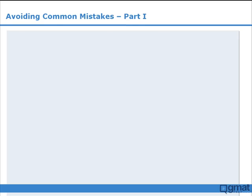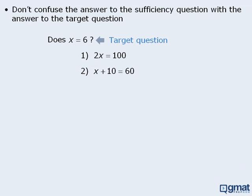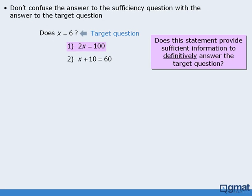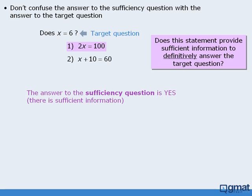The last tip in this lesson is: do not confuse the answer to the sufficiency question with the answer to the target question. In this question we must determine whether or not x equals 6. Statement 1 tells us that 2x equals 100. Does this statement provide sufficient information to answer the target question? Yes — there is sufficient information because we could solve the equation for x and determine whether or not x is equal to 6. So statement 1 is sufficient.